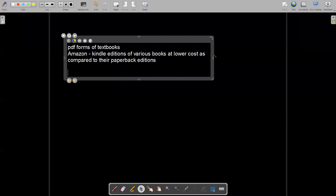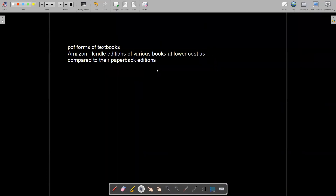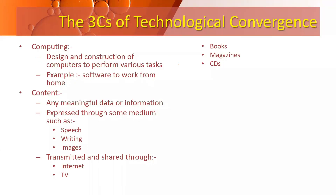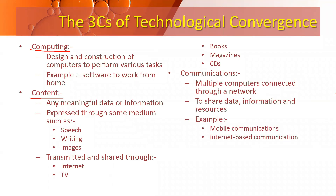Any type of images, speech, or information transmitted through Internet, TV, books, magazines, or CDs comes under content. The third C is Communications — multiple computers connected through a network to share data, information, and resources. Examples include mobile communications and internet-based communication. These are the three C's of technological convergence. There are four types of technological convergence: digital, messaging, media, and content.